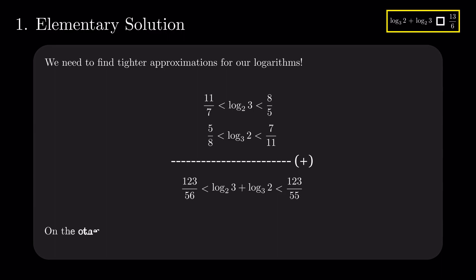So, 13 divided by 6 is 1599 divided by 738. The upper bound is 1599 divided by 715 and the lower one is 1599 divided by 728. It's easy to see that 1599 divided by 738 is less than the sum of logarithms and hence, the maximum between log base 2 of 3 plus log base 3 of 2 and 13 divided by 6 is the former.